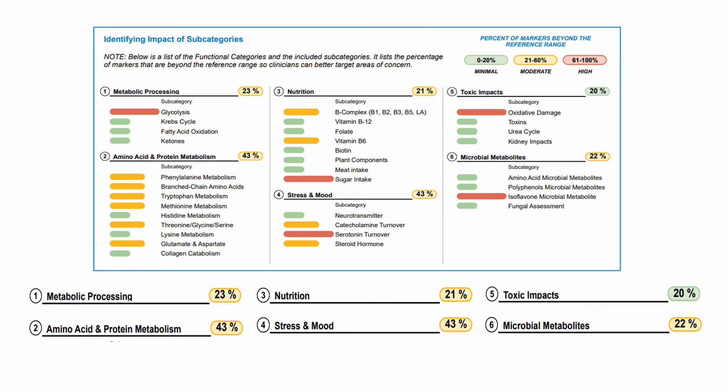This is a closer look at the bottom half, which lists the subcategories and the percentage of markers that are out of range. The categories are metabolic processing, amino acid and protein metabolism, nutrition, stress and mood, toxic impacts, and microbial metabolites. As you can see here in this example, metabolic processing has 23% of all the markers within the category out of range. But when you look at the individual subcategories, you can see that that primarily comes from the glycolysis category.